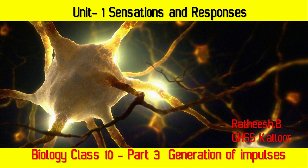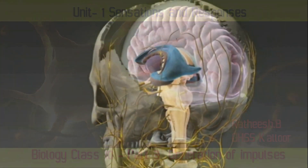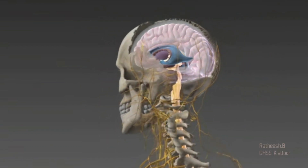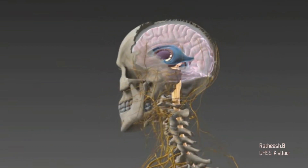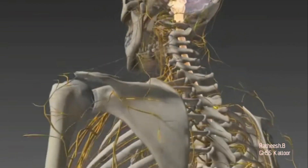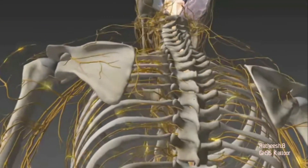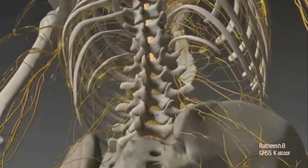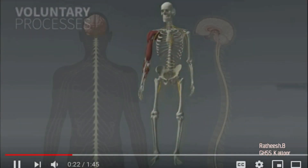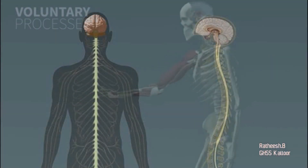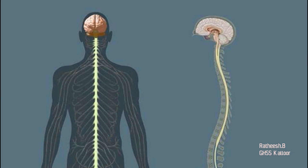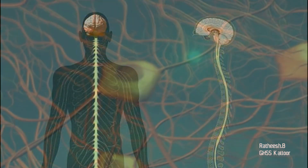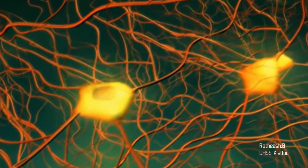There are specialized cells in the sense organs and other parts of the body to receive stimuli. These cells are known as receptors. They receive stimuli and generate suitable impulses. Normally, responses occur when the impulses generated by the receptors on receiving the stimuli reach the brain. The nervous system controls and coordinates these actions through these impulses.